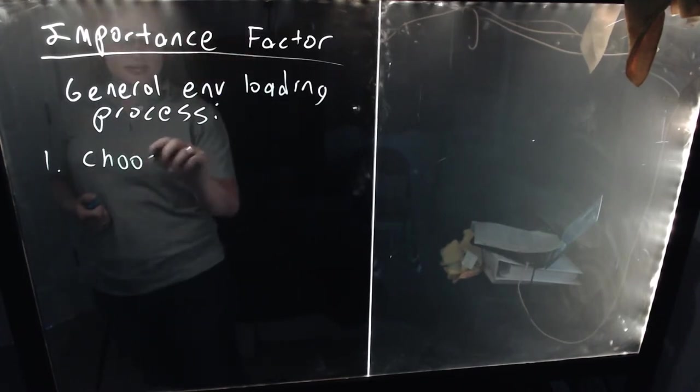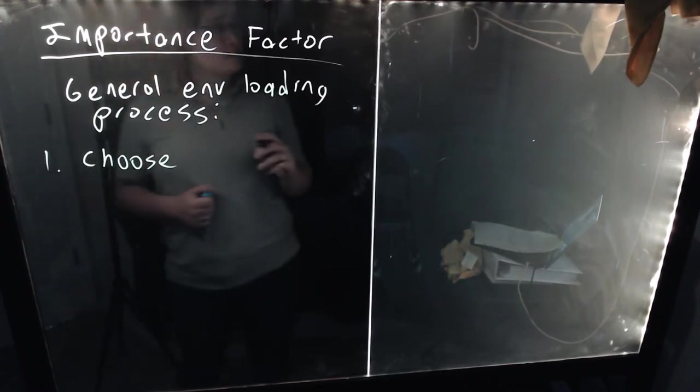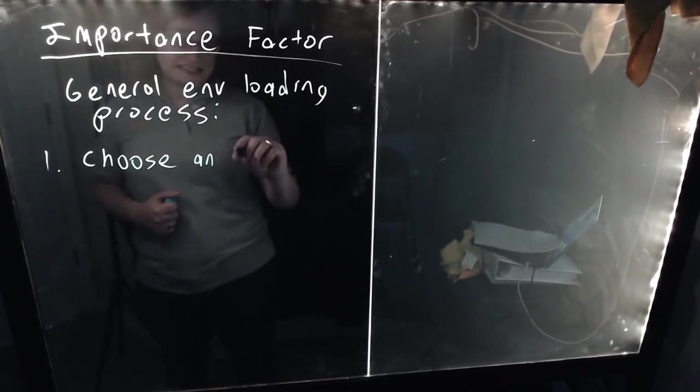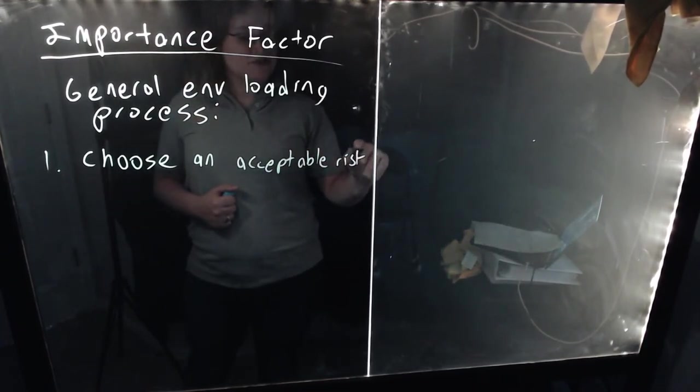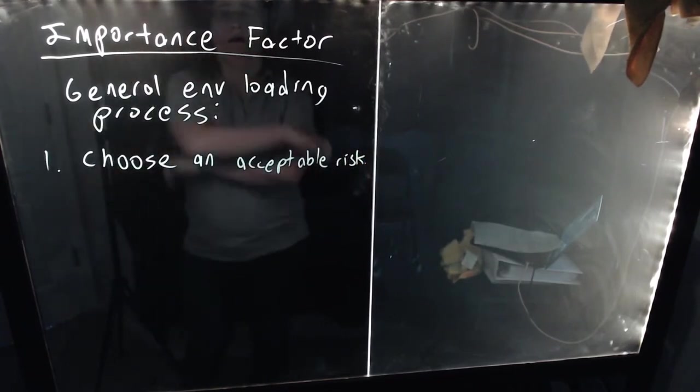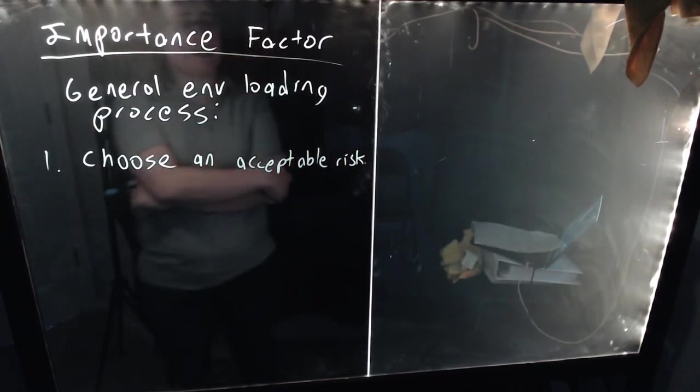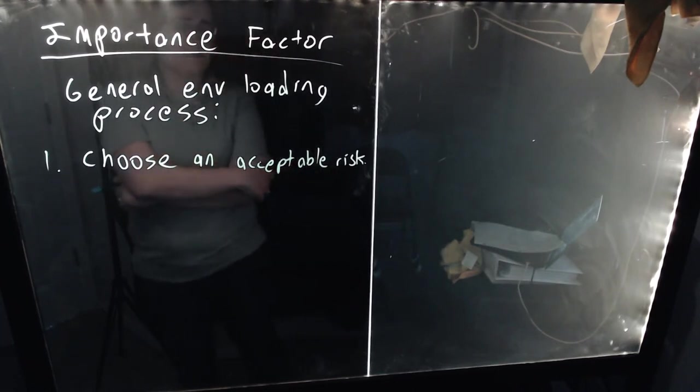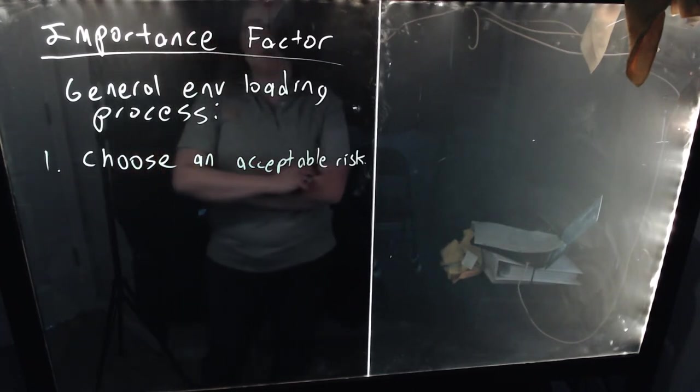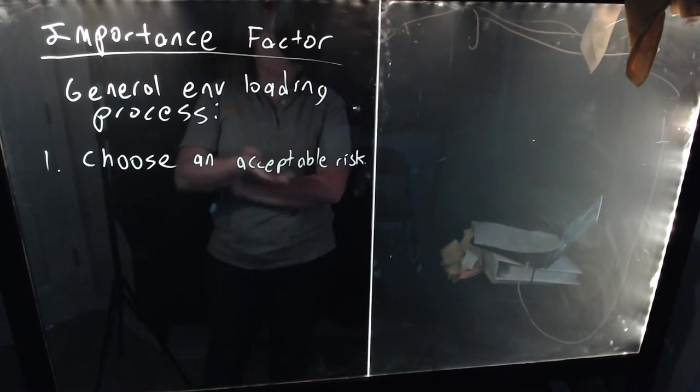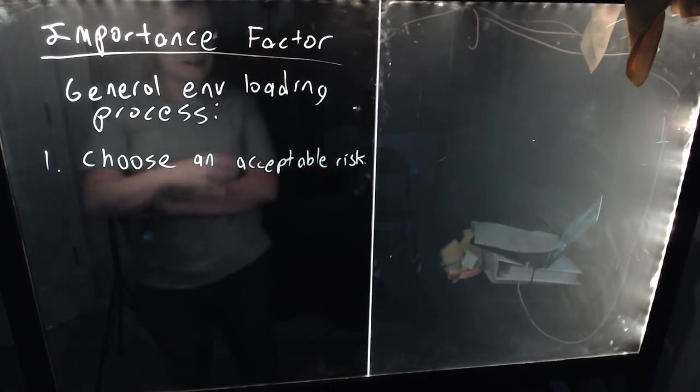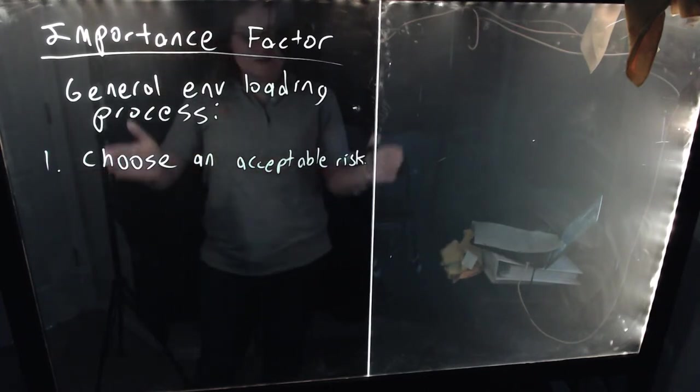But the first thing you do is, for a given kind of failure, a given type of loading, you choose an acceptable risk. What do I mean by this? Well, you choose an acceptable level of risk. You might choose a 2% annual probability of exceedance or a 50-year storm. Basically, you choose an acceptable level of risk.